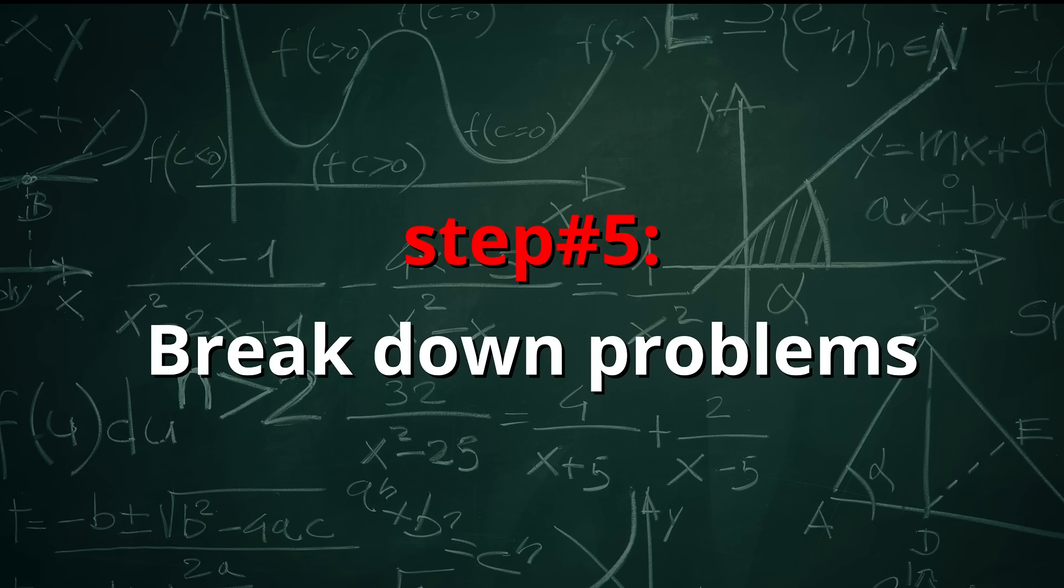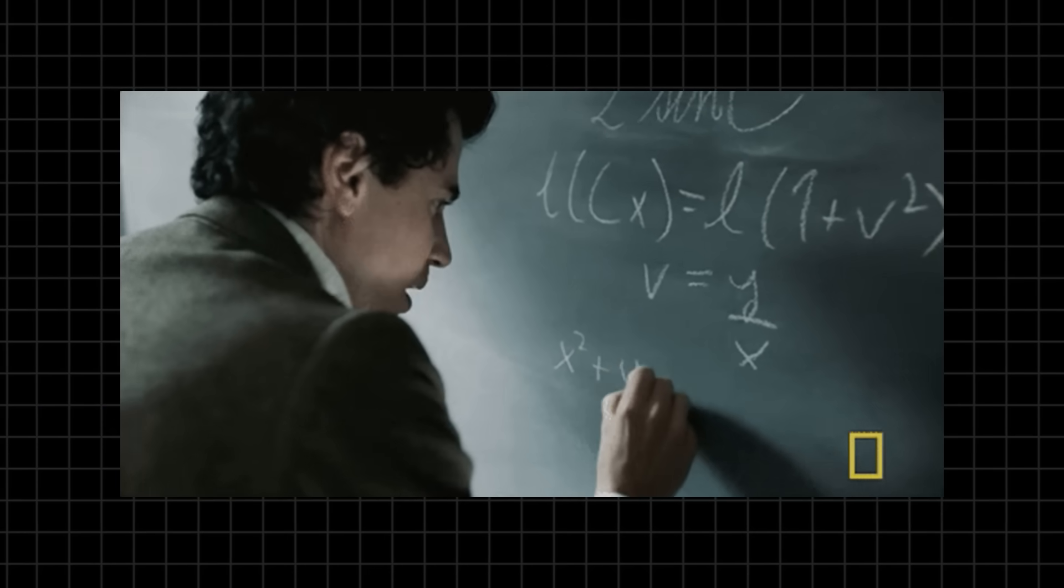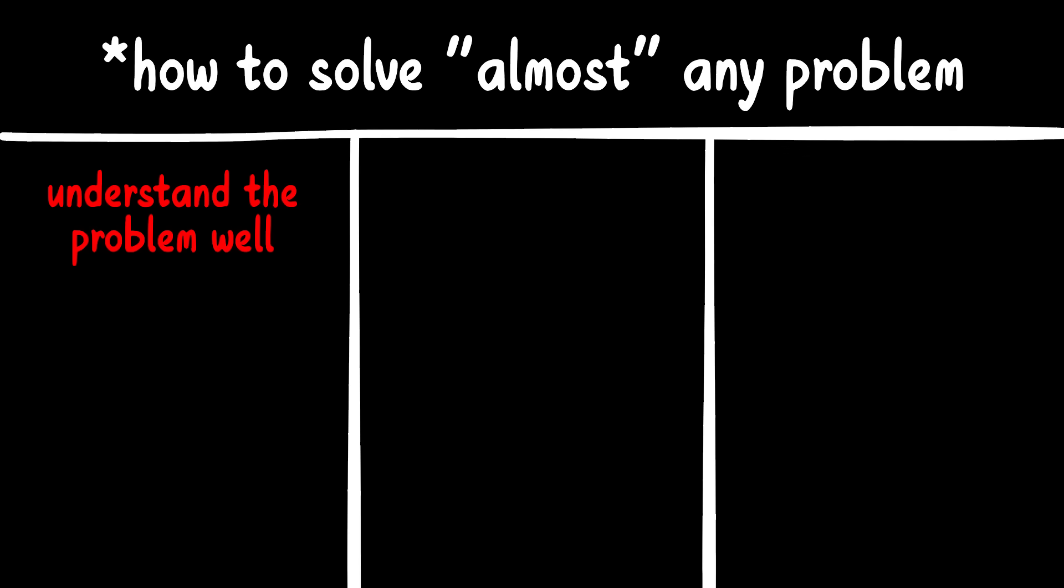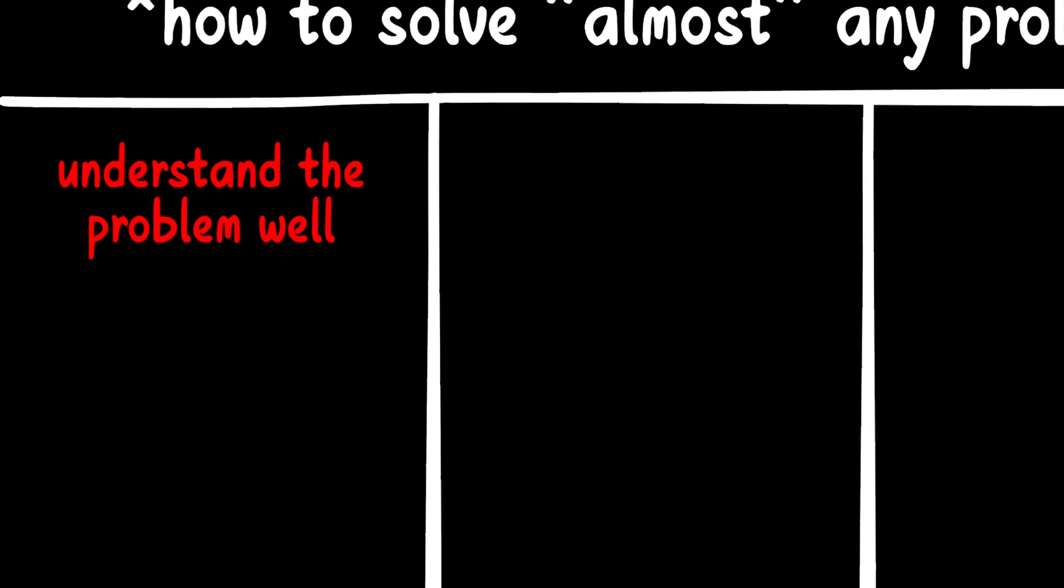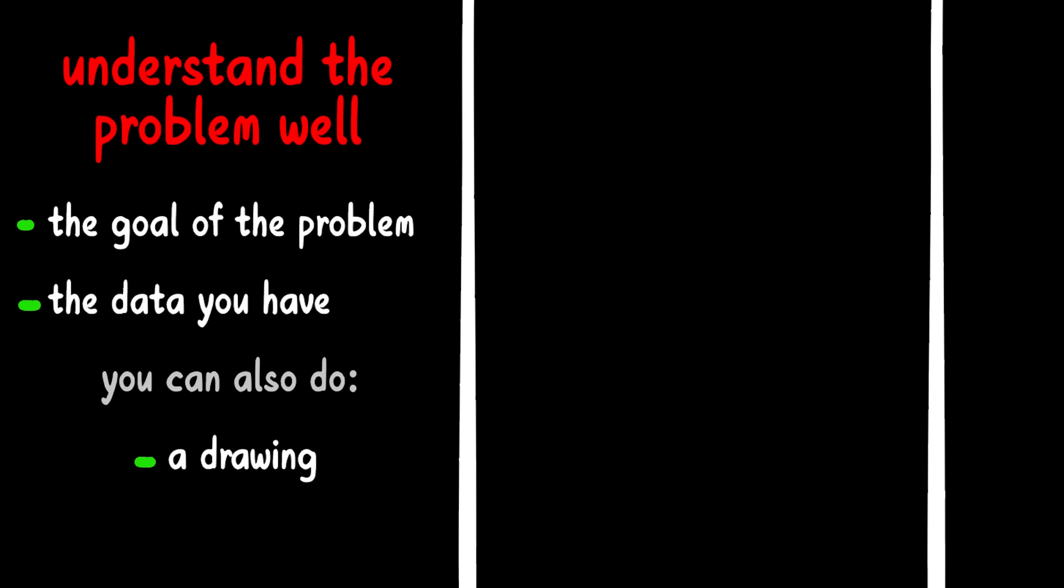Step number five, break down problems. As George Polya teaches in his book, most problems can be solved by following three simple steps. The first is to understand the problem. At this stage, you need to clearly identify what the question is asking and what information you're given. It can also help to draw a diagram or sketch to make things more visual.